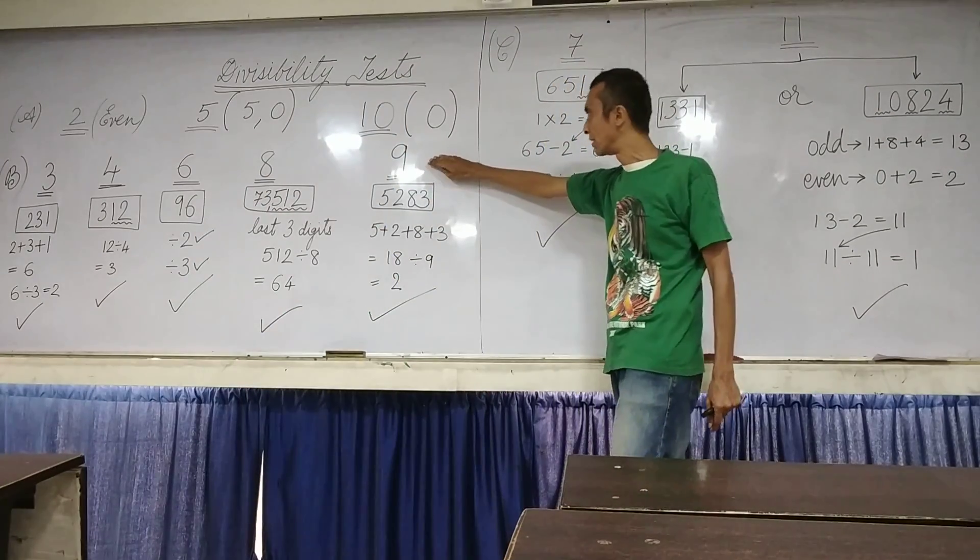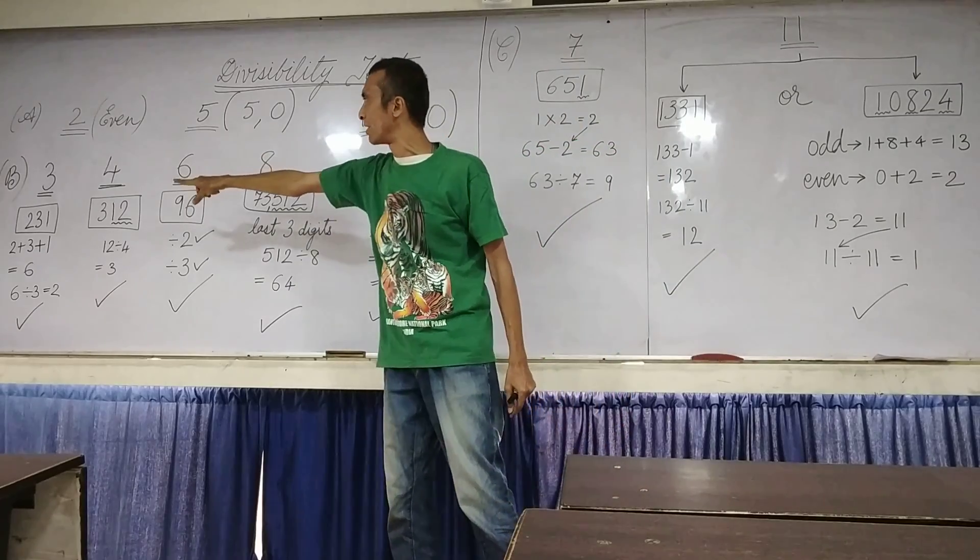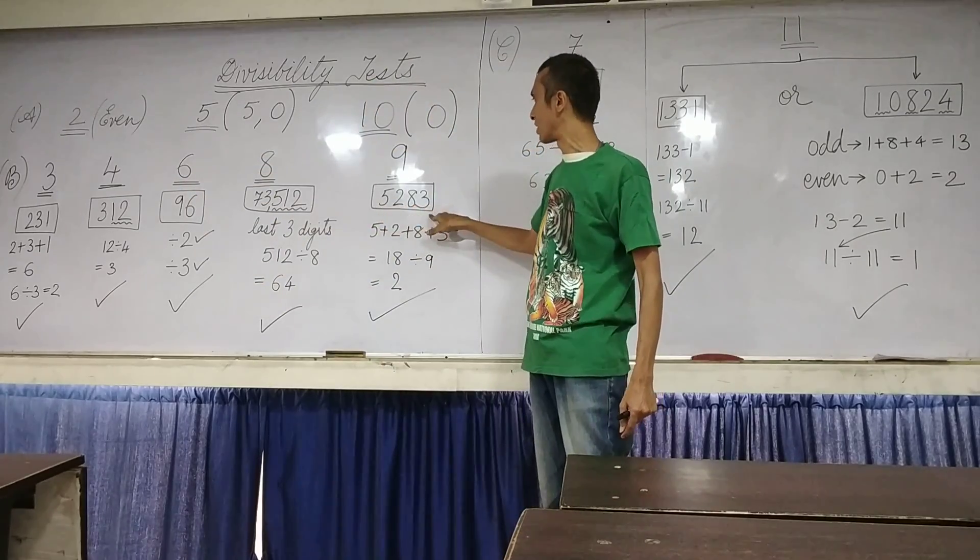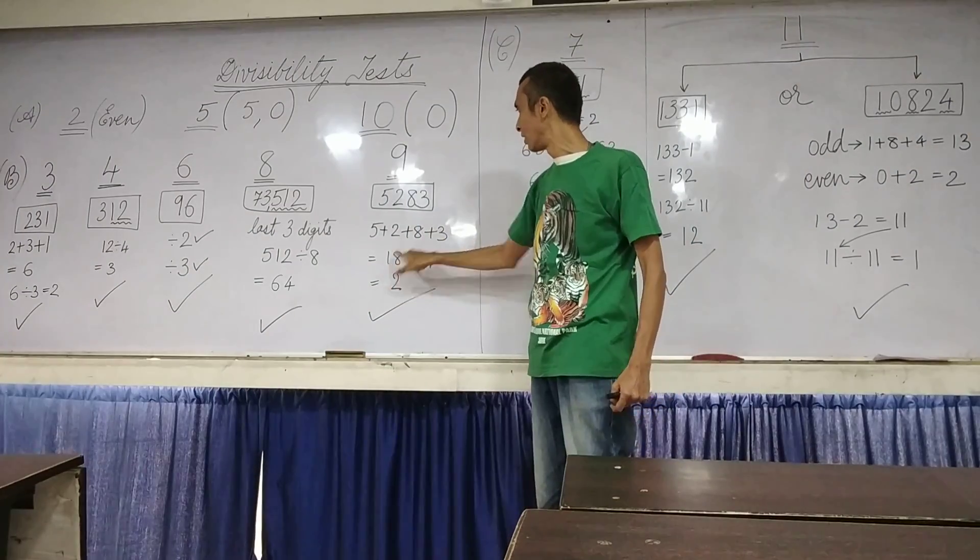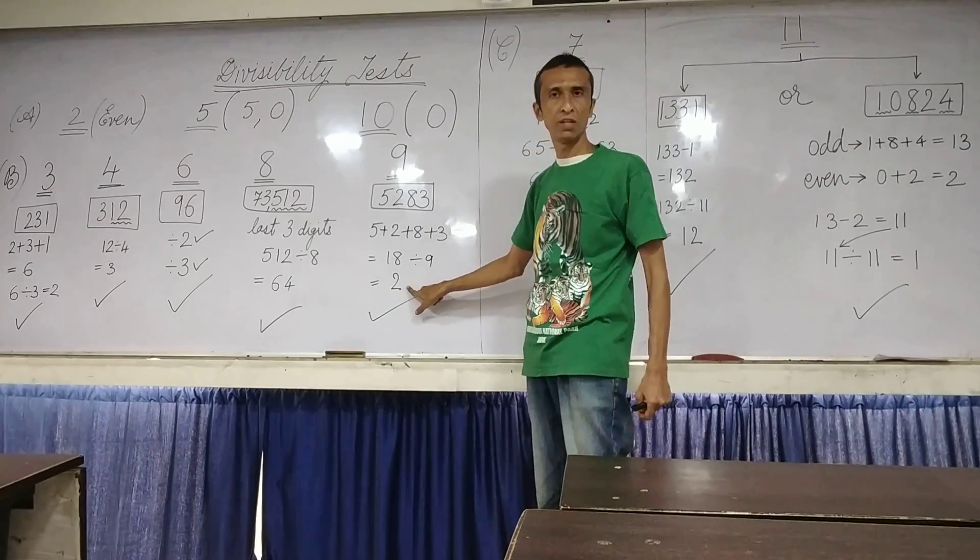Next is 9. 9 is also very parallel to 3. You take all these digits over here, 5, 2, 8 and 3. You add them, you get 18. If it is divisible by 9, here it is. So this number is also divisible by 9.